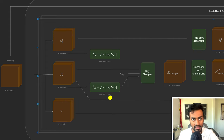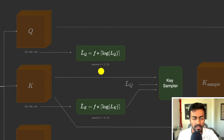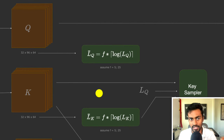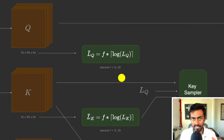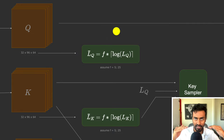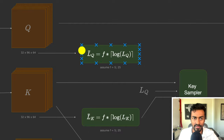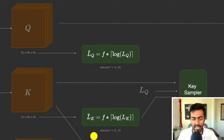We have the query, key, and value tensors. For each, we compute L_Q_bar and L_K_bar. L_Q_bar equals factor F (assumed to be 5) times ceiling of ln(L_Q). With L_Q = 96, ln(96) ≈ 4.56, ceiling gives 5, multiplied by 5 gives L_Q_bar = 25. The same operation gives L_K_bar = 25. This constant will be used momentarily for sampling.